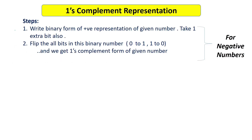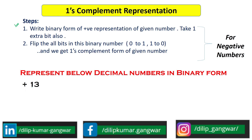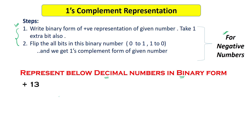We will take some examples to understand about this one's complement representation and then understand all the steps. Here we have the number +13, a decimal number, and we have to convert this into binary form using the one's complement representation.